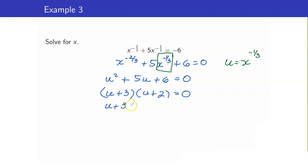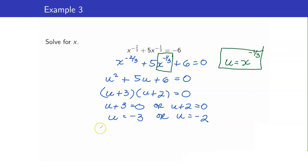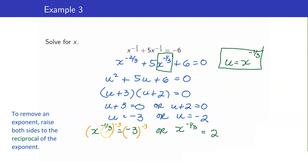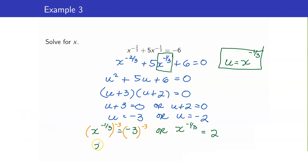So u + 3 = 0 or u + 2 = 0, giving u = -3 or u = -2. Now switch back to x: x^(-1/3) = -3 or x^(-1/3) = -2. To get rid of the exponent -1/3, raise both sides to the power of -3 — the reciprocal of -1/3. Recall: a negative exponent means a^(-m) = 1/a^m.